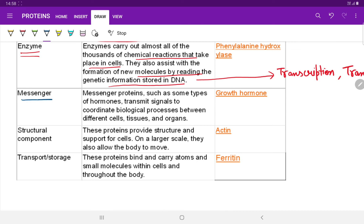Next is messenger. The messenger proteins, such as some types of hormones, transmit signals to coordinate biological processes between different cells, tissues and organs, such as growth hormones. They carry out the signals which activate growth of cells.